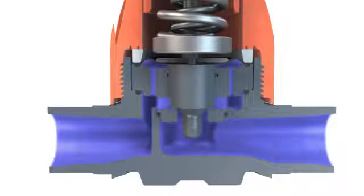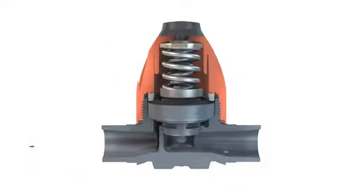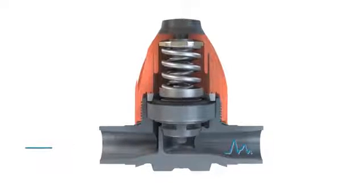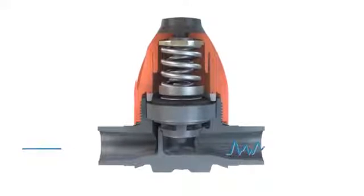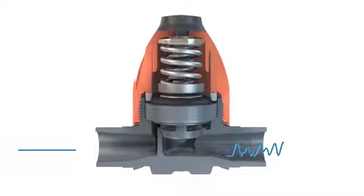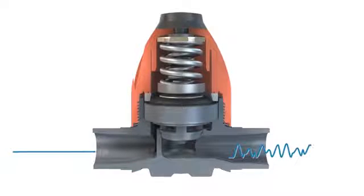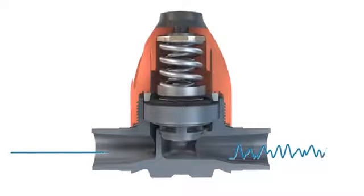The valve then closes again until the inlet pressure equals the set pressure. Pressure surges are diverted through the valve, maintaining a constant input pressure. The retaining valve can also be used to create a constant line pressure to prevent